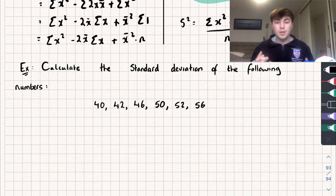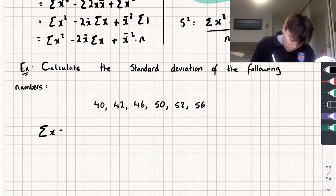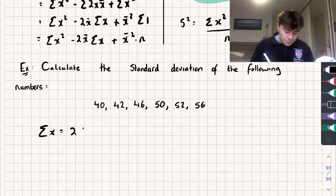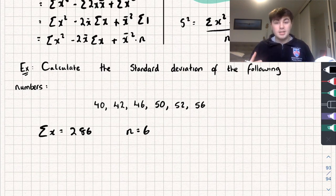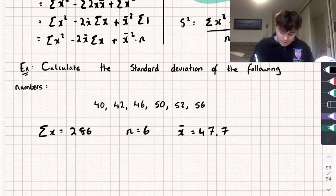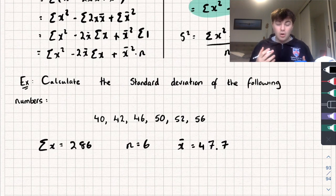Now let's take a look at an example where we need to calculate the standard deviation of a dataset consisting of six different values. The first thing I'm going to do is calculate the mean. Summing all x values: 40 plus 42 plus 46 plus 50 plus 52 plus 56 gives 286. Dividing by n equals 6, the mean is 286 divided by 6, which gives 47.6 recurring, so approximately 47.6 to one decimal place.